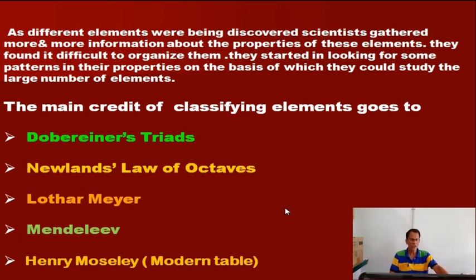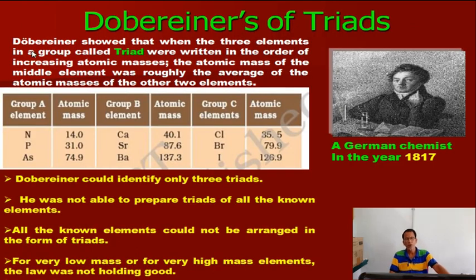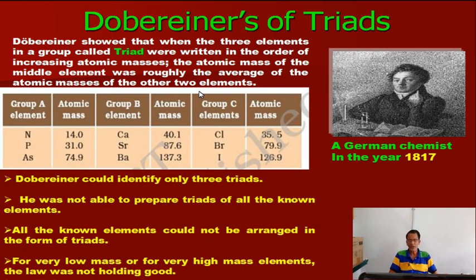First we will discuss Dobereiner's Law of Triads. Dobereiner, in the year 1817, was a German chemist who arranged the elements in a systematic way. His table is called Dobereiner's Triads. According to Dobereiner, the elements are arranged in increasing order of atomic mass, and the atomic mass of the middle element is the average of the atomic masses of the other two elements. That means he made different triads containing three elements.